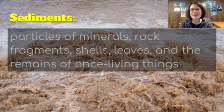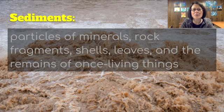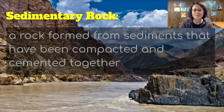Rocks are classified by how they're formed. Igneous rocks are formed by magma and lava that have been melted inside the earth. Sedimentary rock is made of sediments — particles of minerals, rock fragments, shells, leaves, and the remains of once living things. Sedimentary rock is a rock formed from sediments that have been compacted and cemented together.